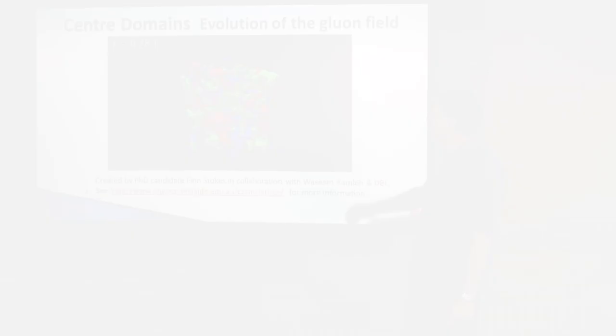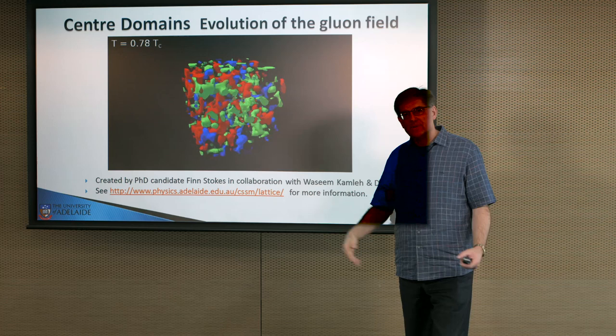I like showing this animation because it gives me an opportunity to show you how supercomputers are used in calculating quantum chromodynamic properties. You're looking at a very small region of space. Again, it's about the size of a proton. The lumps you're looking at are regions in space where you could have a quark-anti-quark pair or maybe three quarks that would form a baryon.